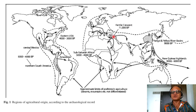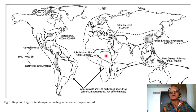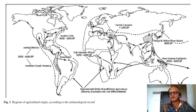New evidences may emerge elsewhere. The Fertile Crescent goes back to 11,000 BP. These are the approximate limits of prehistoric agriculture — deserts, mountains, etc. are taken into account. Obviously not all regions would have been favorable for agriculture. Diffusion happened in every direction, with approximate limits extending all the way into the Pacific, including Oceania — New Guinea into New Zealand, and Madagascar and so on.